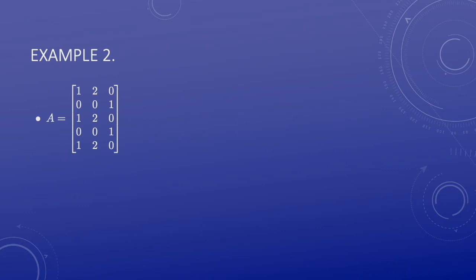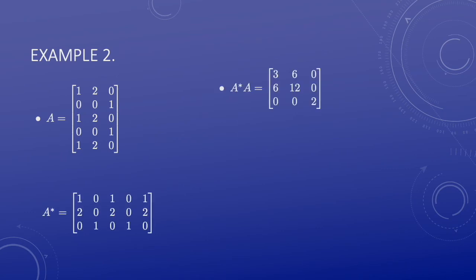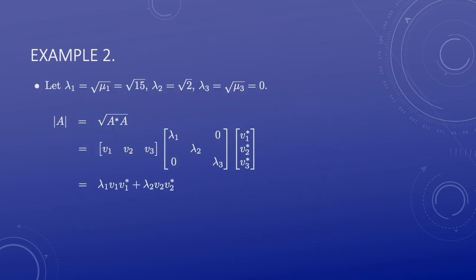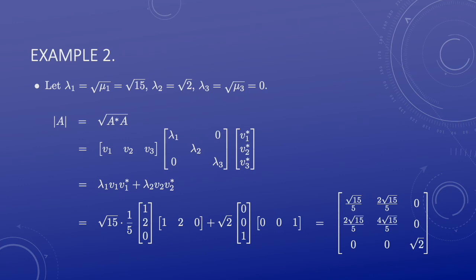Let's look at another example. Here A is 5 by 3. We write down the transpose and A star A. The next step is to find the eigenvalues and eigenvectors of A star A. Note that this matrix is block diagonal, so the calculation can be simplified. Here are the eigenvalues in descending order, along with the corresponding eigenvectors. Note that mu 3 is zero, so A star A is singular. The singular values are lambda 1, lambda 2, lambda 3, and lambda 3 equals zero. We then use the spectral decomposition to find the polar of A. Substitute lambda 1, lambda 2, V1, V2 into this expression, and get this 3 by 3 matrix.